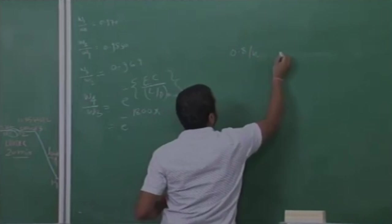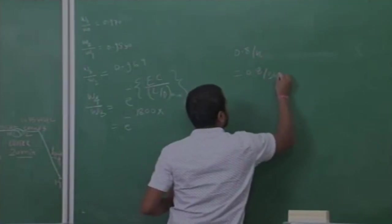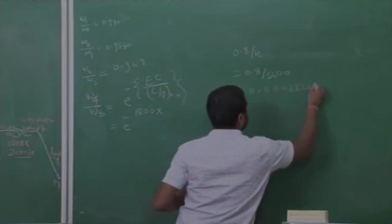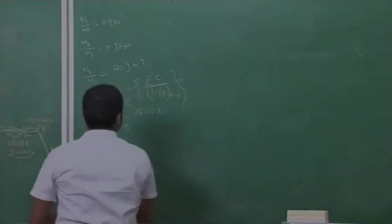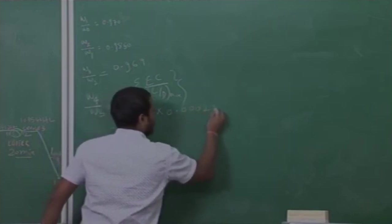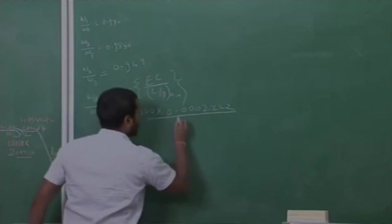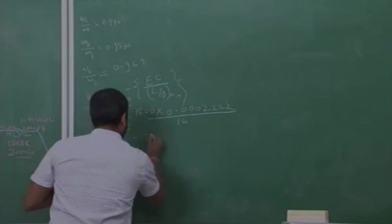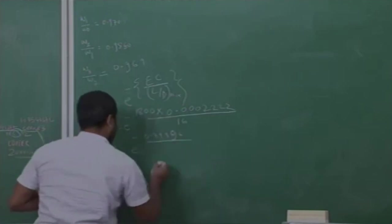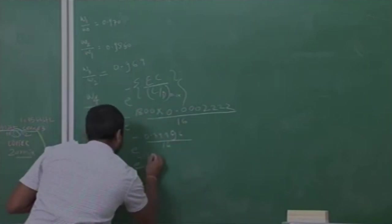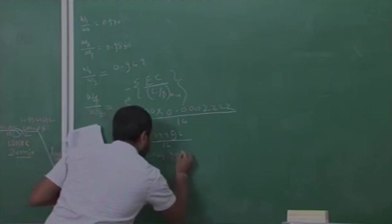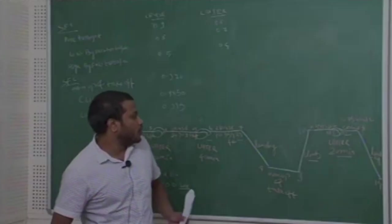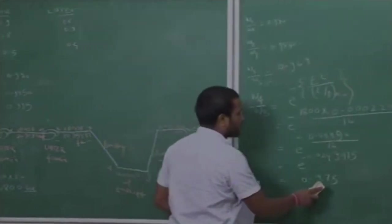We need to convert it 0.8 per hour so 0.8 divided by 3600 and this will give 0.0002222 per second. Put here 0.0002222 divided by L by D max value is 16. So here e to the power minus 0.3996 divided by 16. The value is 0.975. So W4 by W3 is 0.975.